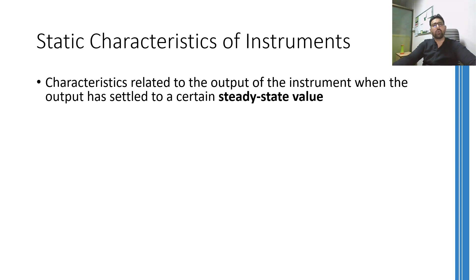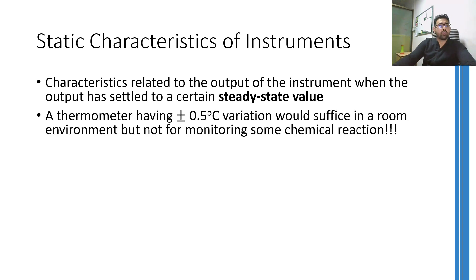While choosing an instrument, both characteristics are equally important, but it depends on the situation and the application as to which characteristics are more important. For example, if you are monitoring your body temperature using a mercury-in-glass thermometer, then the dynamic characteristics don't matter a lot as long as the final output is reliable enough. But if this temperature sensor is used to monitor the temperature of some chemical in a pharmaceutical company, the accuracy of the final output is much more important. Therefore, analysis and requirements of the application will dictate the dynamic and static characteristics of the instruments to be used.